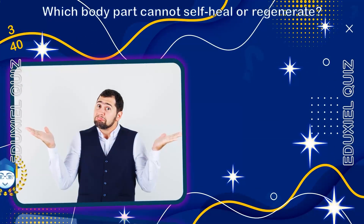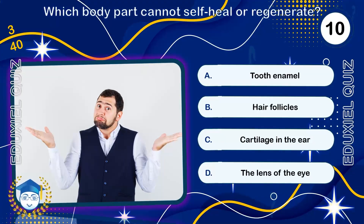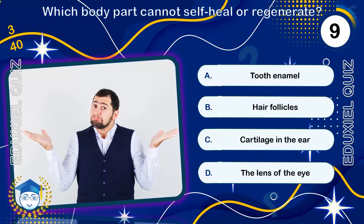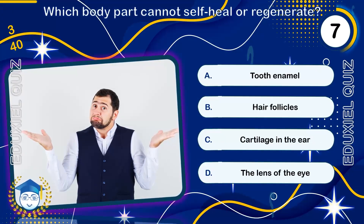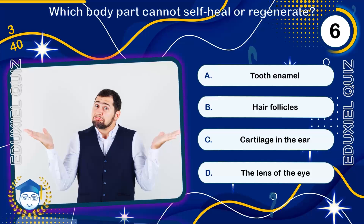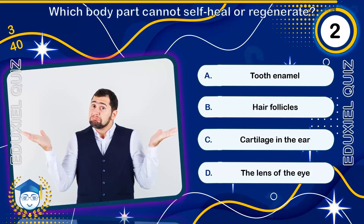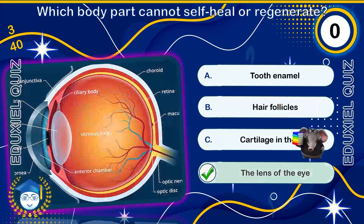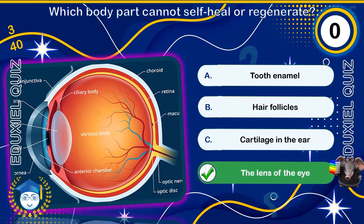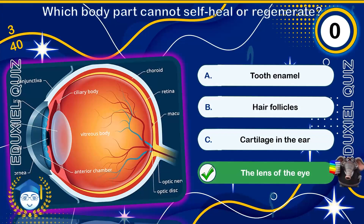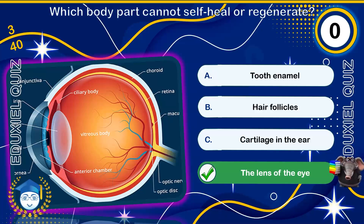Which body part cannot self-heal or regenerate? The lens of the eye. The lens is made of transparent, non-vascular cells. If damaged, e.g., forming a cataract, it must be surgically replaced, as it has no blood supply for self-repair.